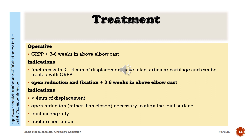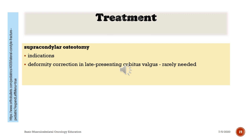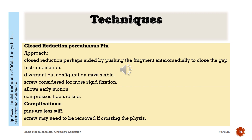Fracture non-union is also an indication for operative treatment. Supracondylar osteotomy: indications include deformity correction in late presenting cubitus valgus, rarely needed. Closed reduction percutaneous pin — Approach: closed reduction, perhaps aided by pushing the fragment anteromedially to close the gap. Instrumentation: divergent pin configuration is most stable; screw considered for more rigid fixation, allows early motion, and compresses the fracture site. Complications: pins are less stiff; screw may need to be removed if crossing the physis.